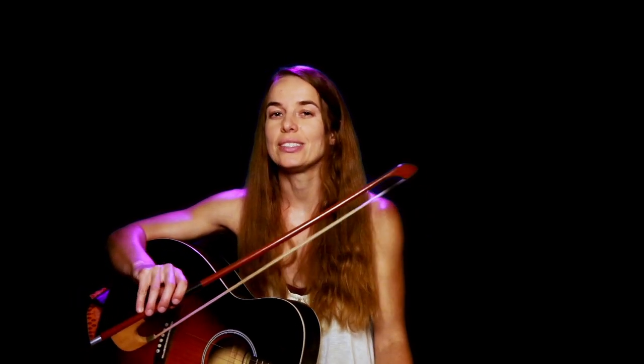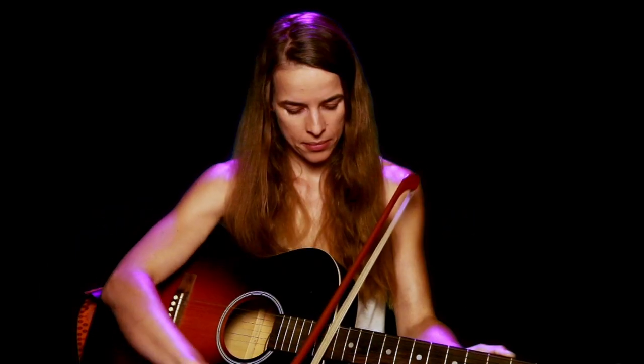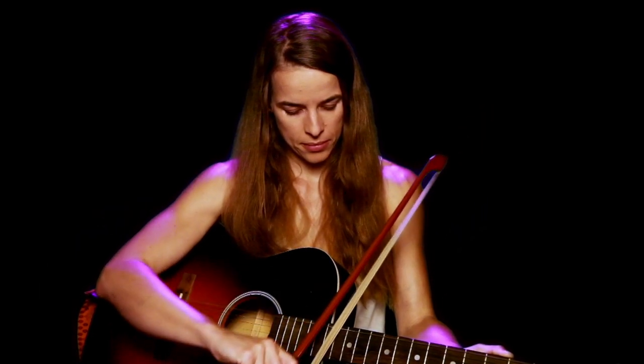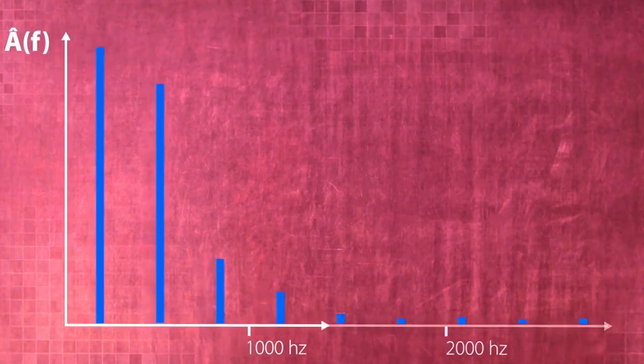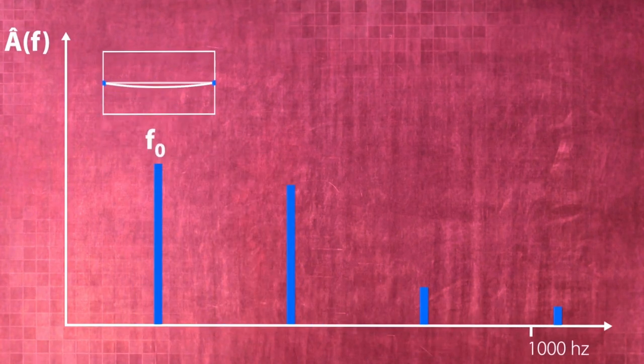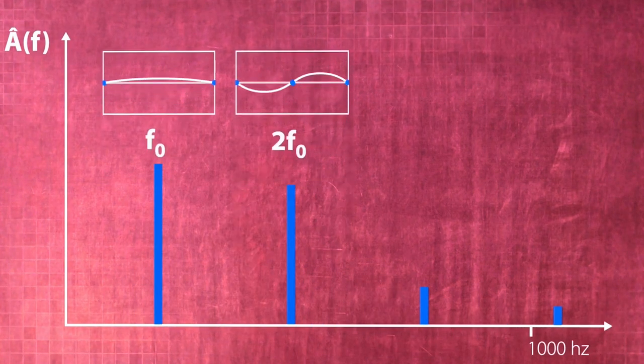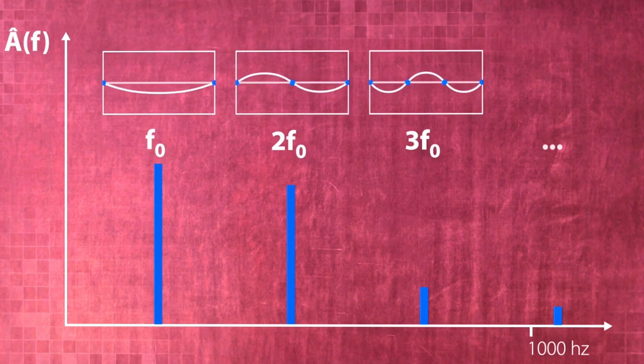If instead of letting the string's vibration decay, we push it back out of equilibrium every time it wants to restore, we can maximize the vibration into resonance. When we pull a bow across the same guitar string, the string exhibits a slip-stick behavior, where the string is pulled with the bow and it detaches at exactly the same rate as the string's natural frequency. The result is a sustained vibration of the string. Most objects have more than one resonant frequency, often occurring as multiples of the fundamental. The series of resonant frequencies is called harmonics.